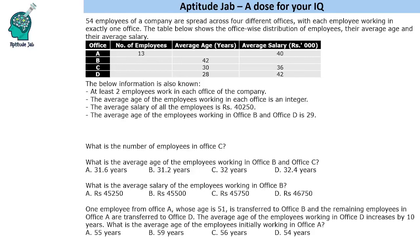Hello everyone, welcome to Aptitude Jab. This problem states that there are 54 employees of a company spread across four different offices, with each employee working in exactly one office. The data table has values missing, and we are given some information to work with.